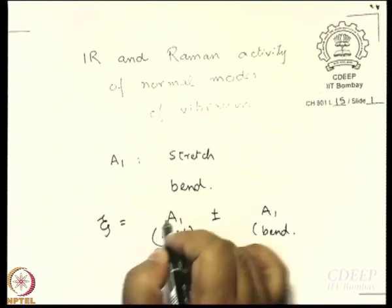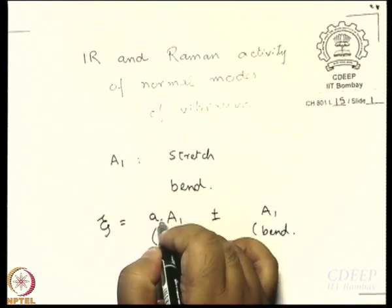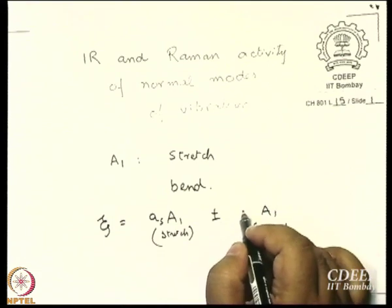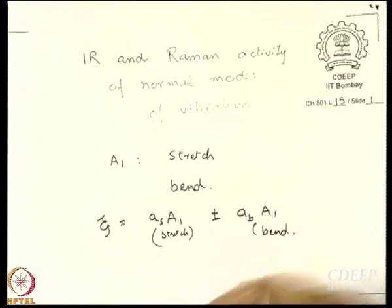This is a linear combination. What we are saying is: xi is equal to maybe an A1 stretch plus an A1 bend. Now one of these coefficients can be 0. We are not saying that it can never be 0, but the general solution is that it is a linear combination of both. That is why we said that we expect the normal mode to be opening up while stretching, and the other is closing down while stretching.